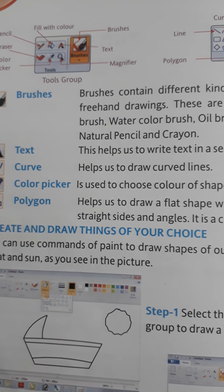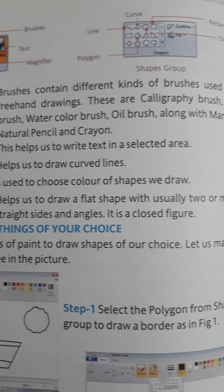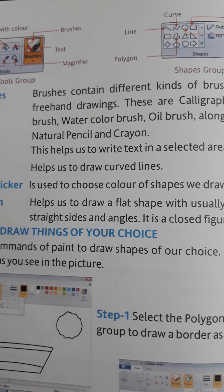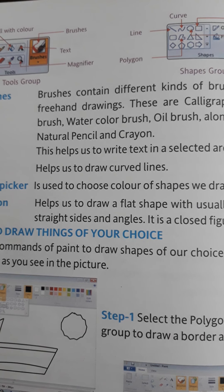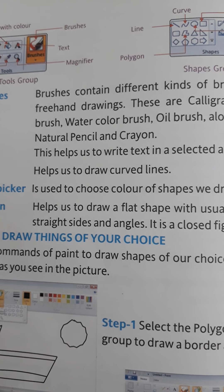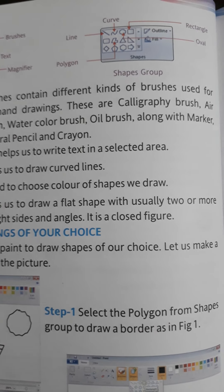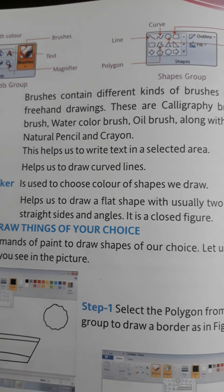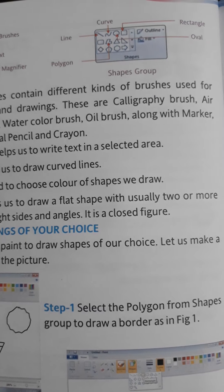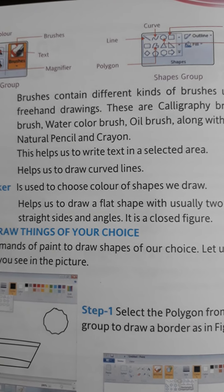First is Brushes. Brushes contains different kinds of brushes used for freehand drawing. Freehand drawing means wherever we move our hand with the brush, the brush will draw automatically over there. These include the Calligraphy Brush, Airbrush, Watercolor Brush, Oil Brush, along with Marker, Natural Pencil, and Crayon.